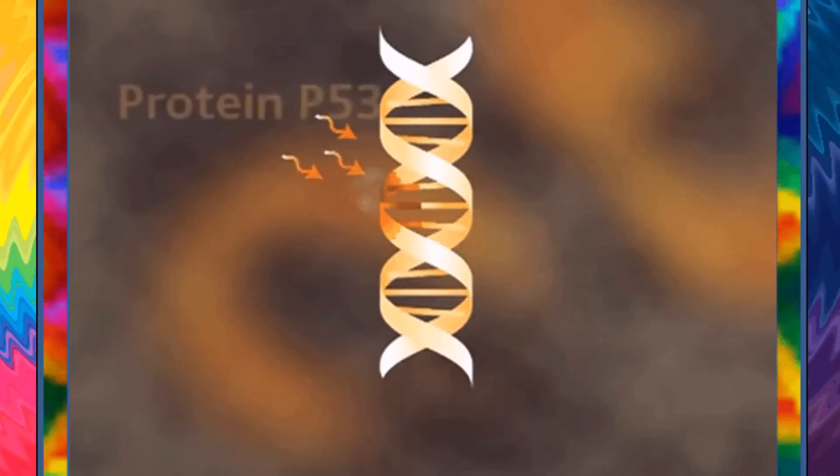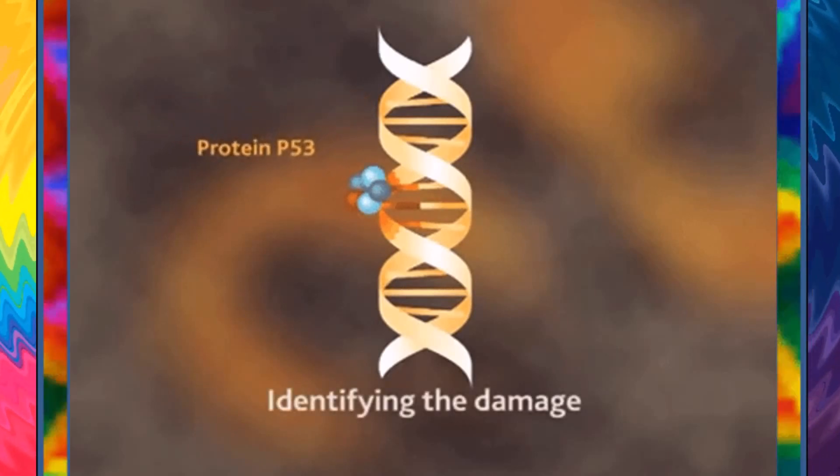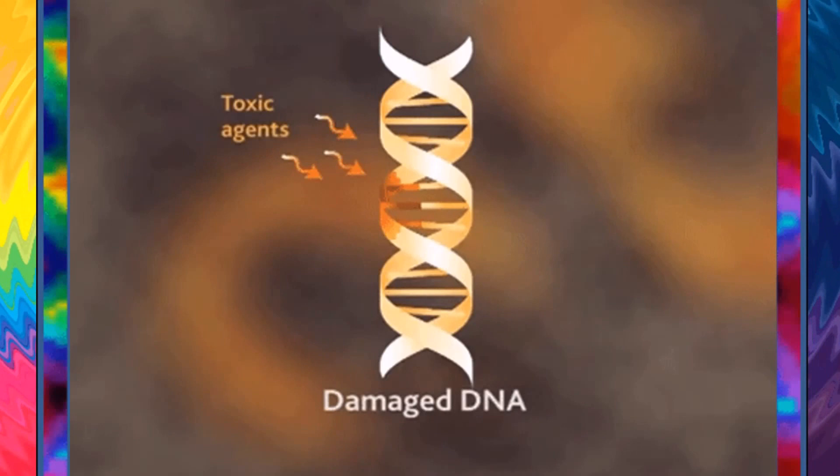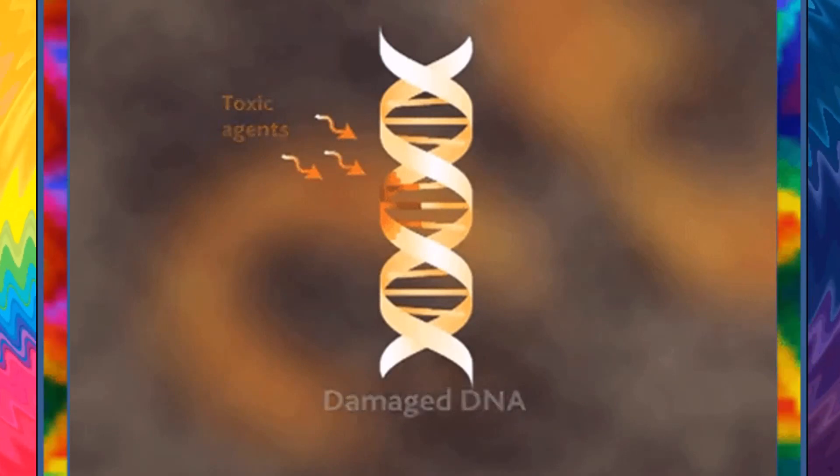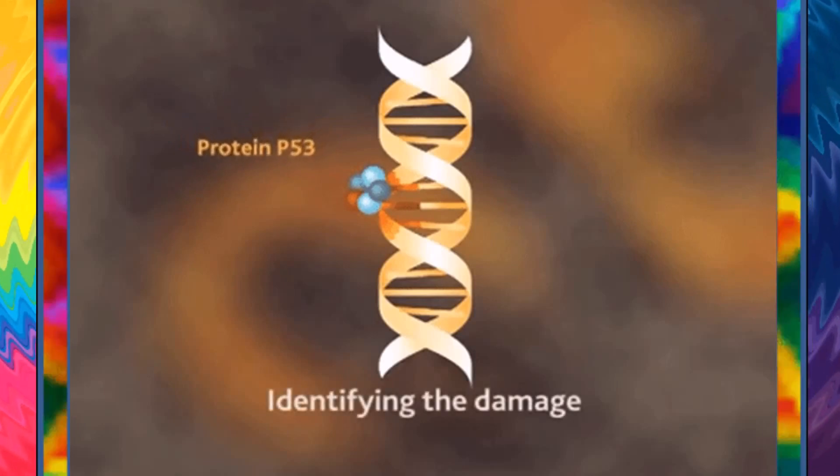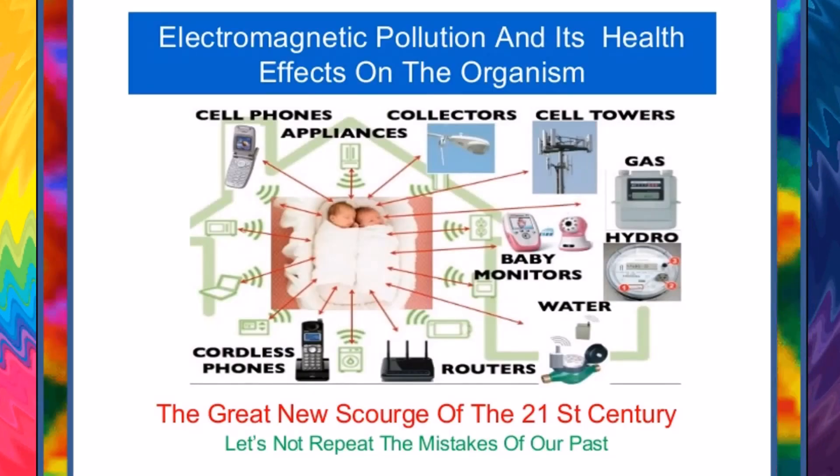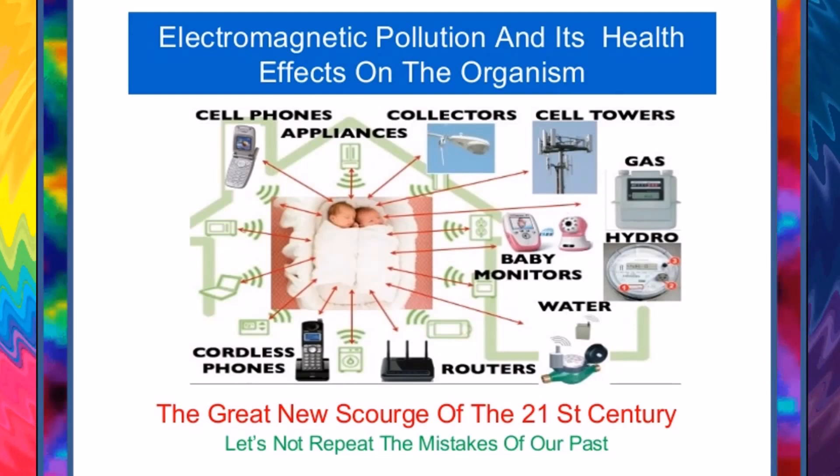Although ultraviolet radiation can only penetrate into the top layers of your skin, it can still do a lot of damage. Over time, you can get skin cancer and your skin may develop deep wrinkles, making you look a lot older than you really are. Other types of radiation, like X-rays and gamma rays, can have even more profound effects.